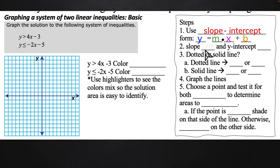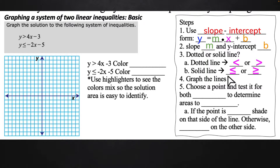So we have slope is M and Y-intercept is B, so we can very quickly identify what our slope is and what our Y-intercept is. Dotted or solid lines — a dotted line is when we're using less than or greater than, and we're going to use a solid line when we have less than or equal to or greater than or equal to. It's visually just letting us know if it's included or just a starting point, and we can actually use a solution on that point.